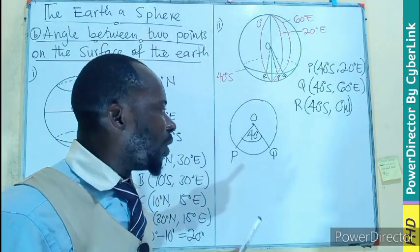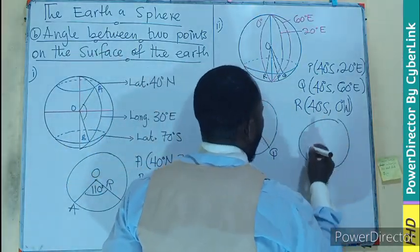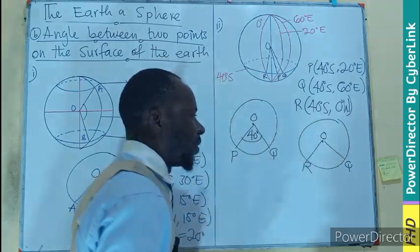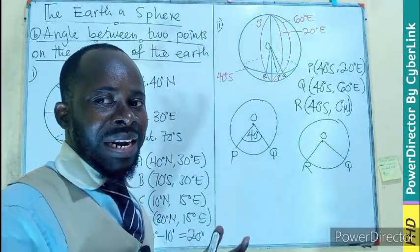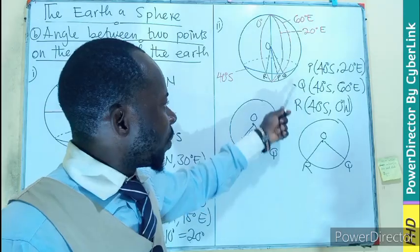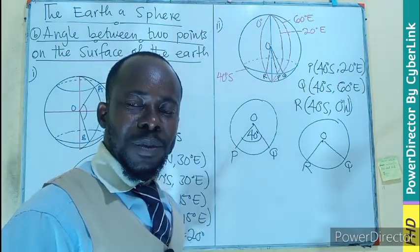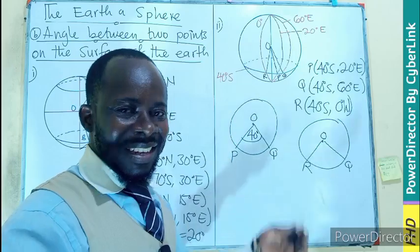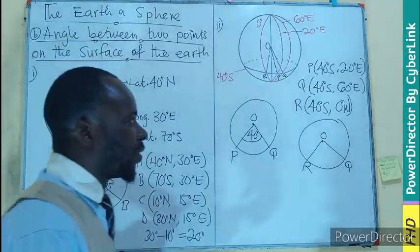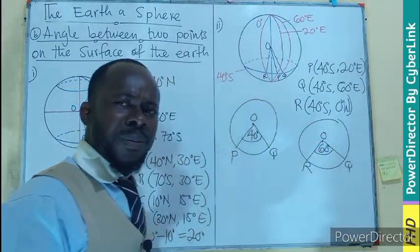The angle between P and Q is 40 degrees. Now let's find the angle between R and Q. They share a common latitude, so we focus on longitude. R is at zero degrees and Q is at 60 degrees east — they are on different sides, east and west, so we add: 60 degrees plus zero degrees equals 60 degrees.